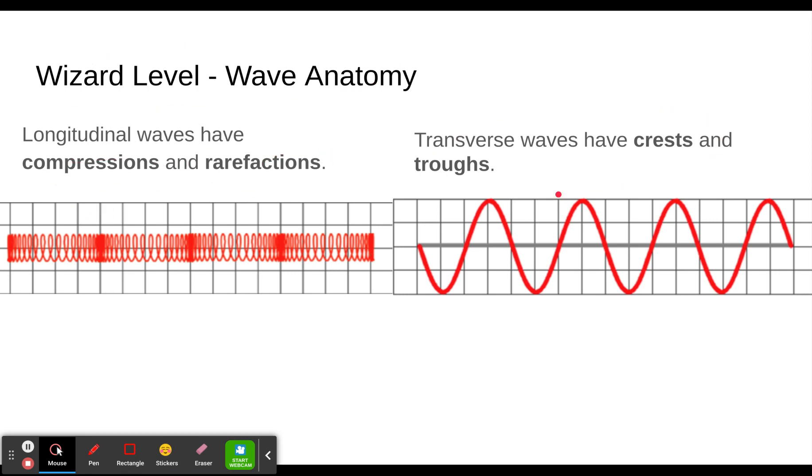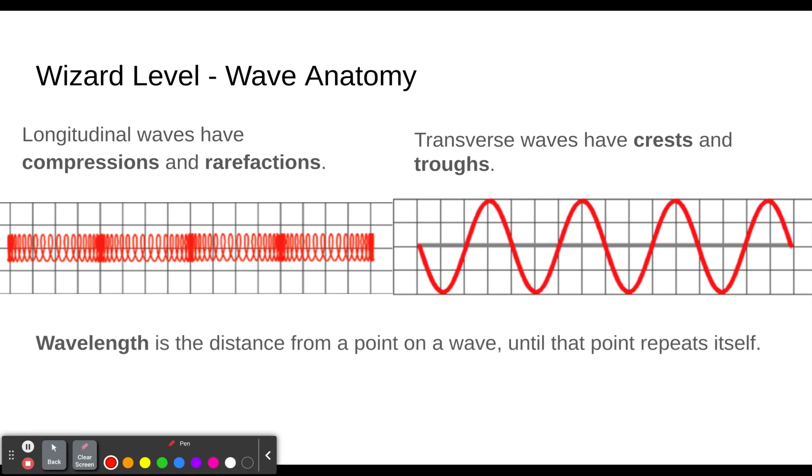The wavelength is the distance from a point to another point on a wave. So you can take a compression and go to the next compression, and that distance is the wavelength. Same thing here, you could go from crest to crest, you could go from trough to trough. You could go from a place at equilibrium where it's moving up to the next place at equilibrium where it's moving up.